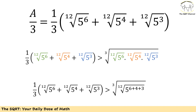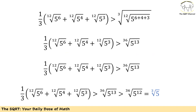The arithmetic mean of these terms is going to be greater than or equal to the geometric mean. After simplifying, the geometric mean is the third root of the 12th root of 5 to the power of 6 plus 4 plus 3. Now let's simplify: combining the third root and the 12th root, I rewrite everything as the 36th root, giving 5 to the power of 13.